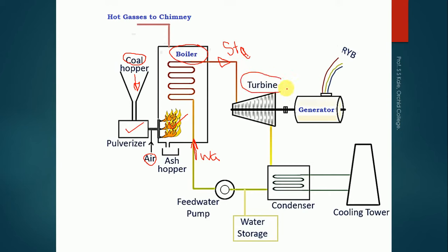The turbine is a device which generates mechanical energy as output. There are various types of turbines: hydraulic turbine, gas turbine, and steam turbine. The type depends on what energy is given as input — if the input is water, it's a hydraulic turbine; if the input is gas, it's a gas turbine; if the input is steam, it's a steam turbine. Currently we are giving steam as input, so this is a steam turbine.